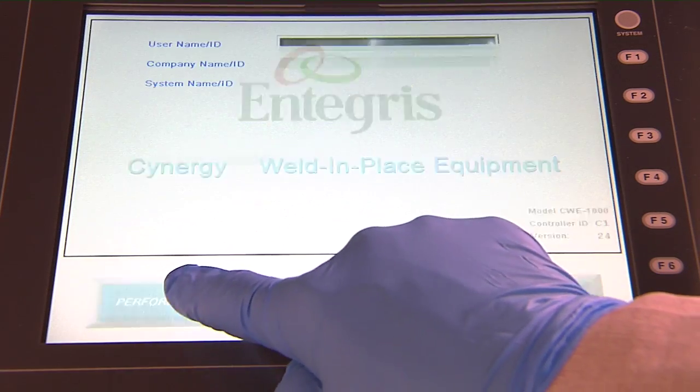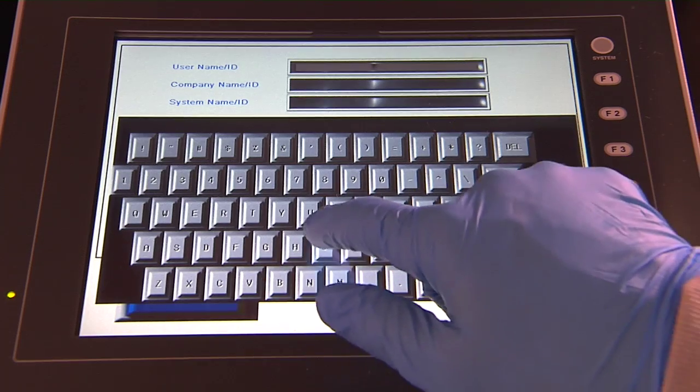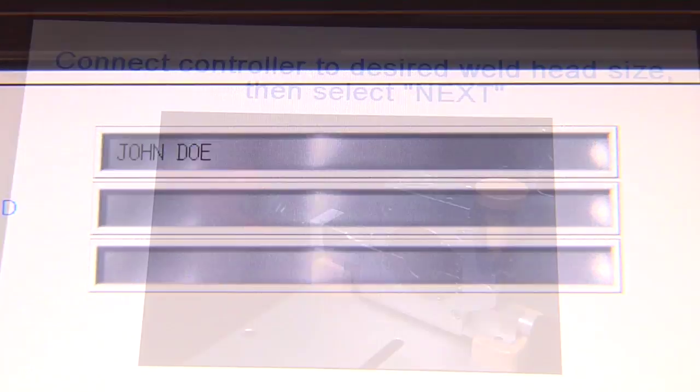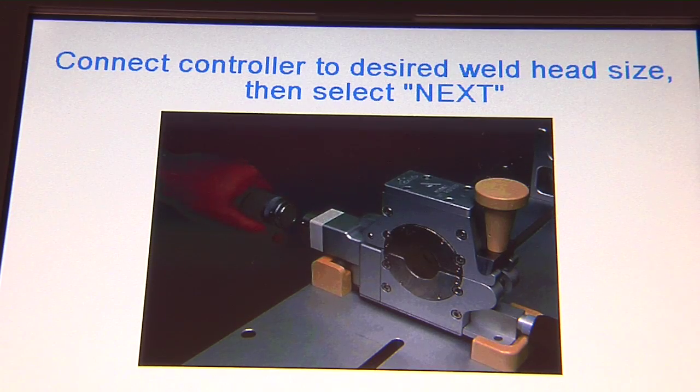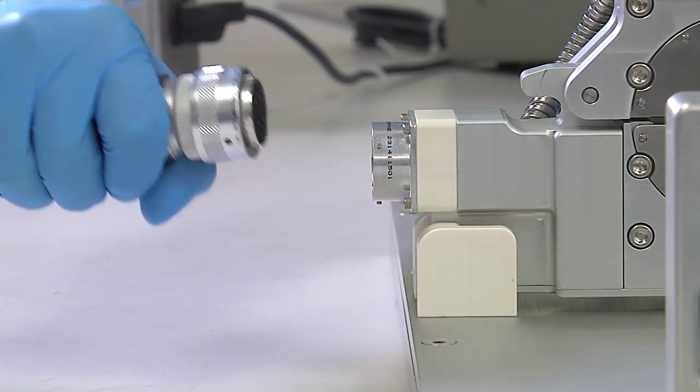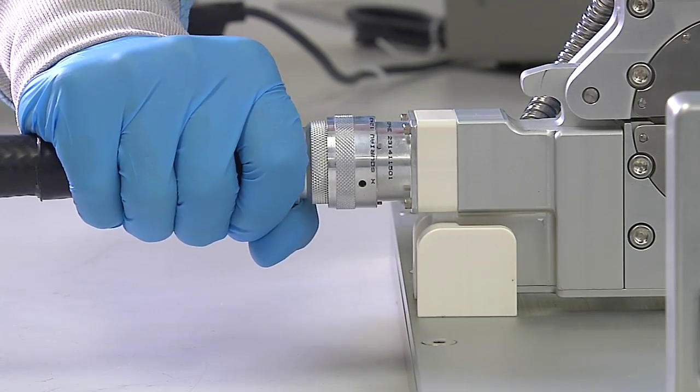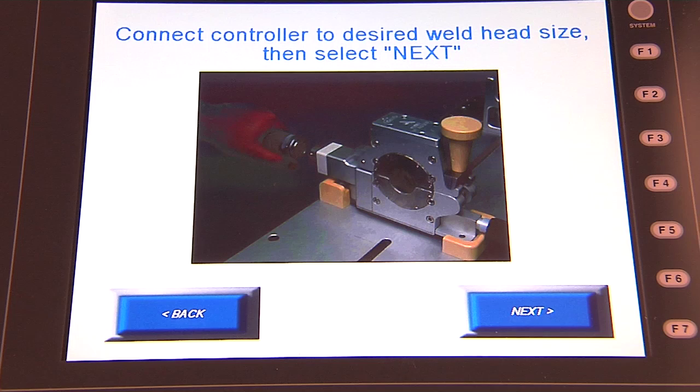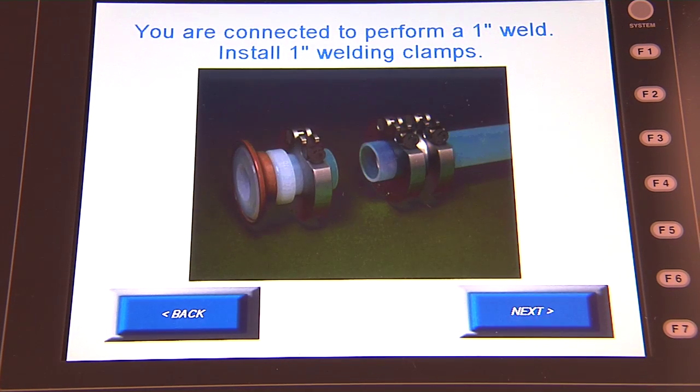Touch the Perform Weld button. Enter the operator information into the fields provided. Connect the desired weld head to the process control cable. The system automatically detects the size of the components being welded together and selects the proper welding parameters.